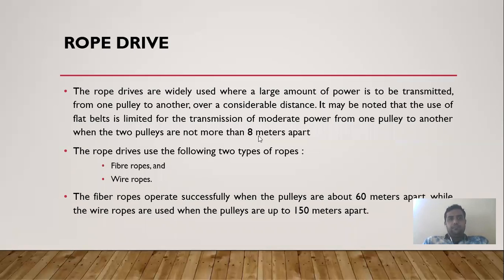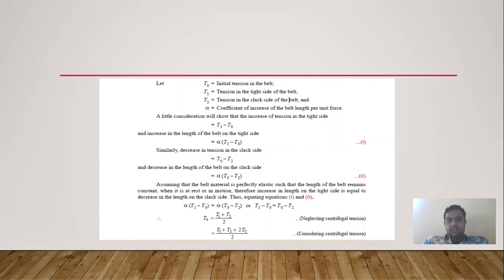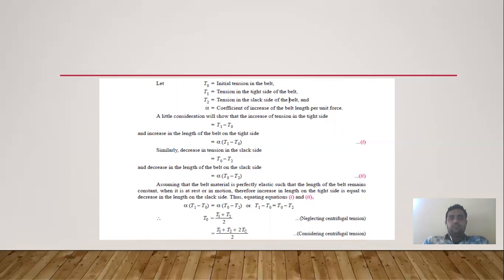This lecture covered belt drive only. In the next lecture, we will consider rope and chain drives. Topics covered in this chapter include: slip of belt, creep of belt, initial tension, and centrifugal tension in belt drives. These are key concepts whenever you design a belt drive.